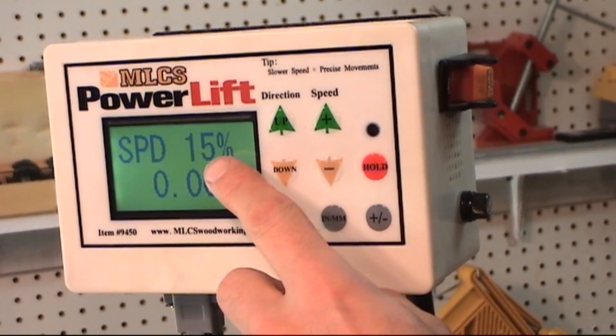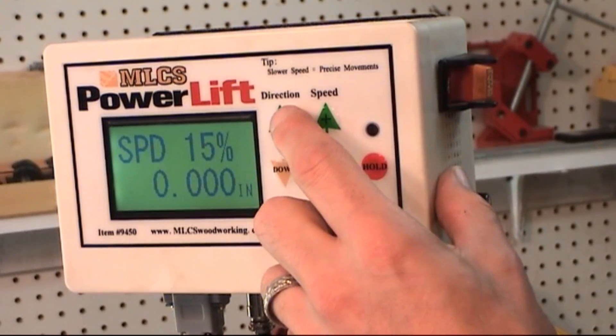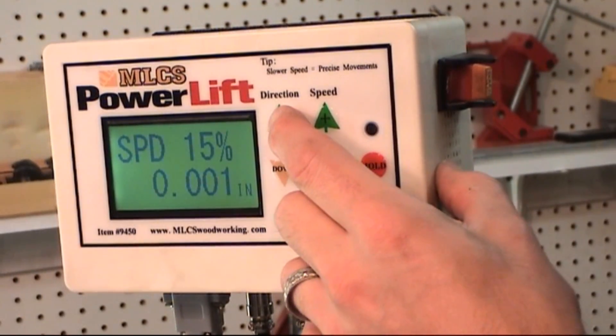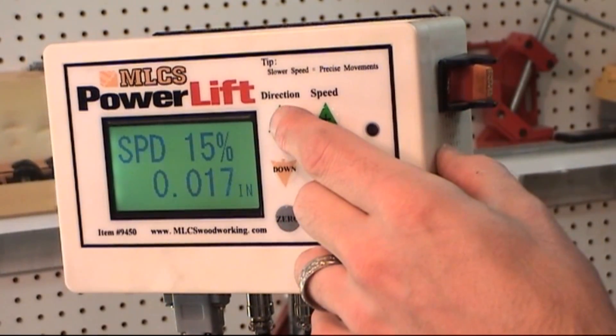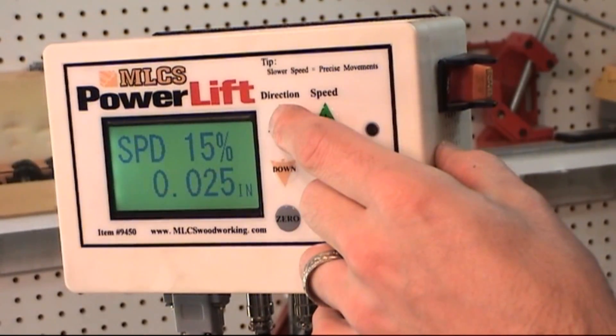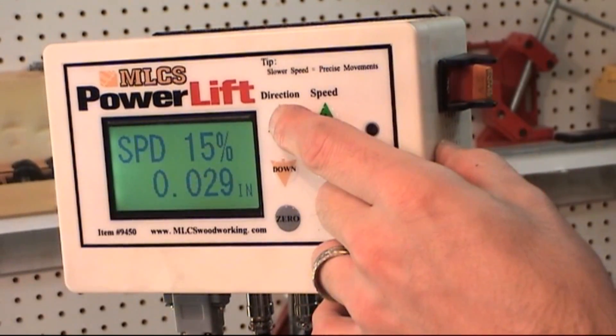When making small changes to the bit height, a slow speed is more accurate. You can see here that I'm moving the lift just a few thousandths of an inch at a time. Precision is amazing.